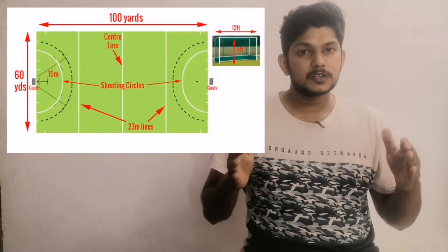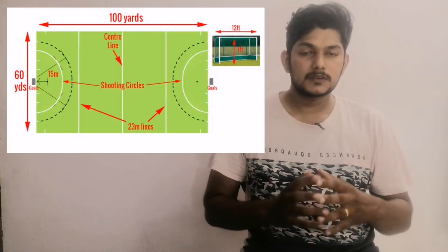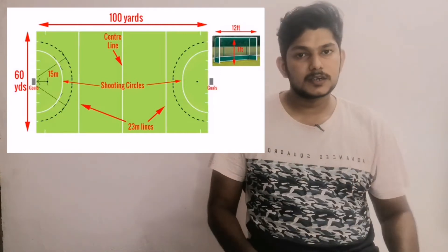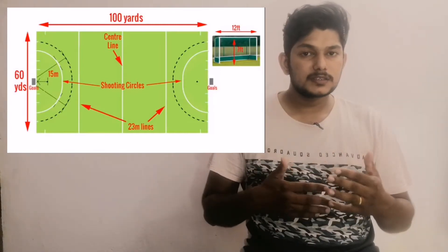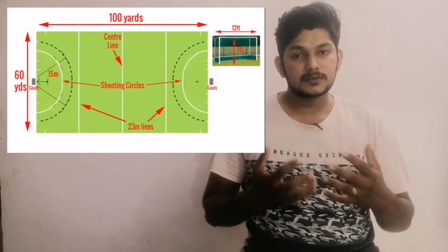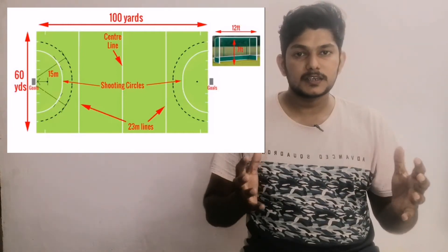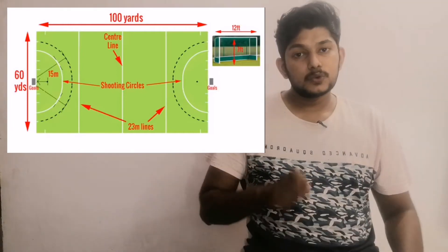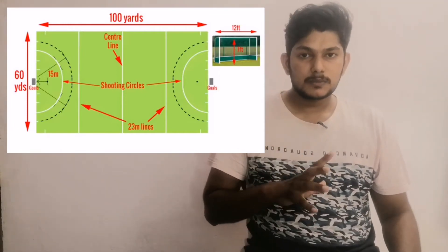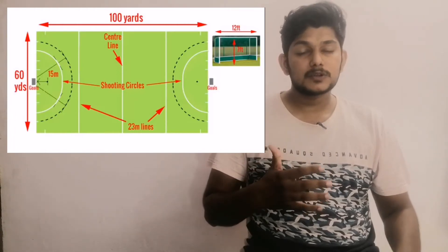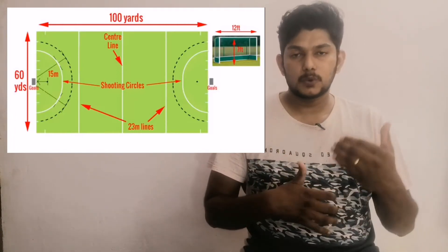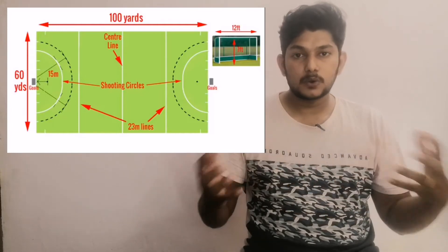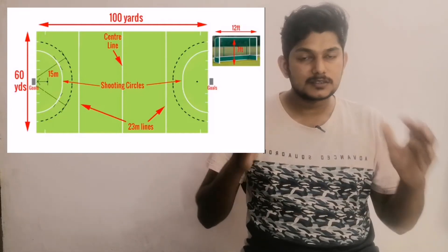We will now cover the main fouls in hockey. Fouls committed inside the shooting circle are marked and scored differently. A foul in the shooting circle is not treated the same as a foul outside it.